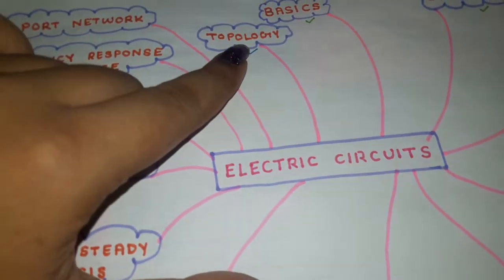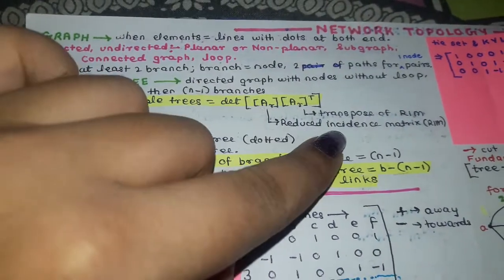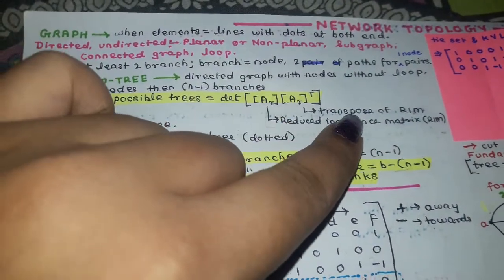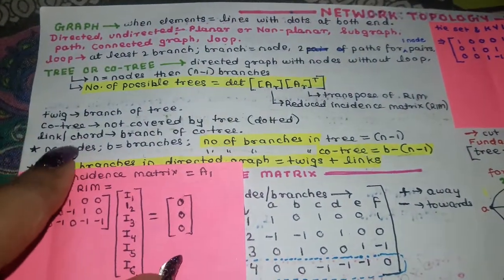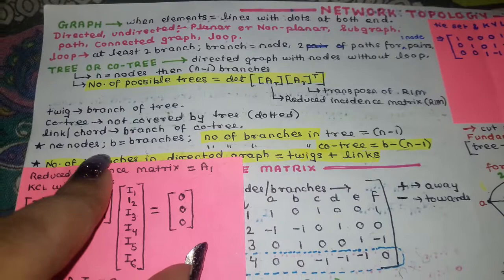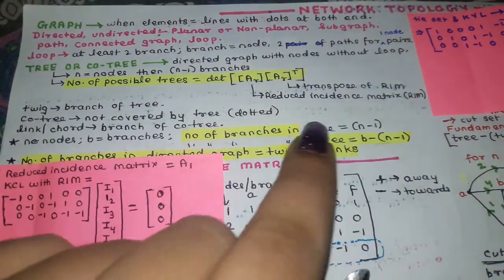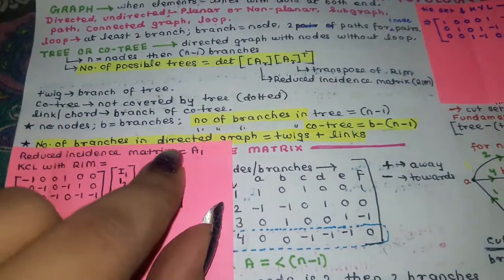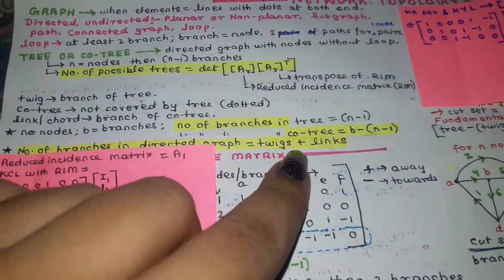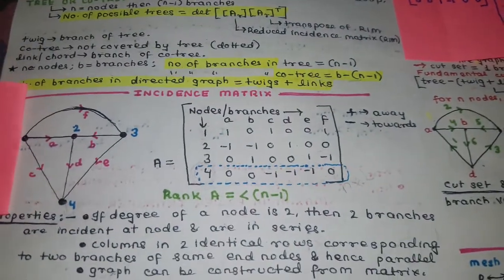Let's move on to Part 2 of topology. The number of possible trees is given by the multiplication of the reduced incidence matrix and the transpose of the incidence matrix. If n equals the number of nodes and b equals the number of branches, the number of branches in a tree is given by one formula, in a co-tree by another, and in a directed graph it is the sum of twigs and links.